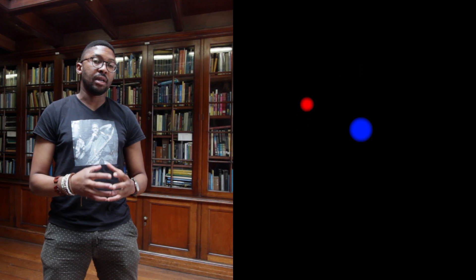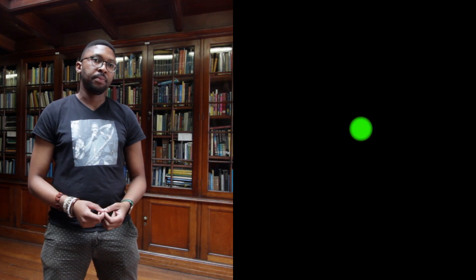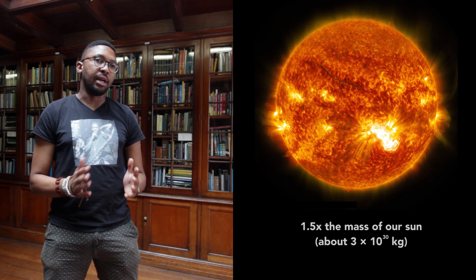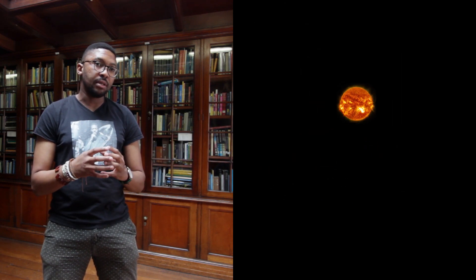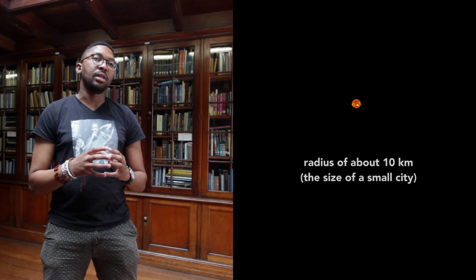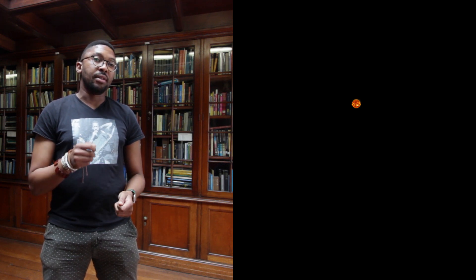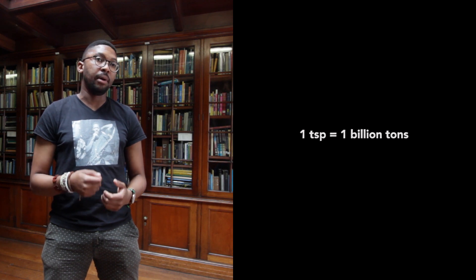In a neutron star, the gravity presses the material so much that the protons and the electrons form neutrons — hence the name neutron star. The mass of a neutron star is about one and a half times the mass of our own sun, but this mass is compressed into a very dense region, a very small volume, with a radius of about 10 kilometers. The density becomes so high that one teaspoonful of material from the neutron star will weigh about a billion tons.